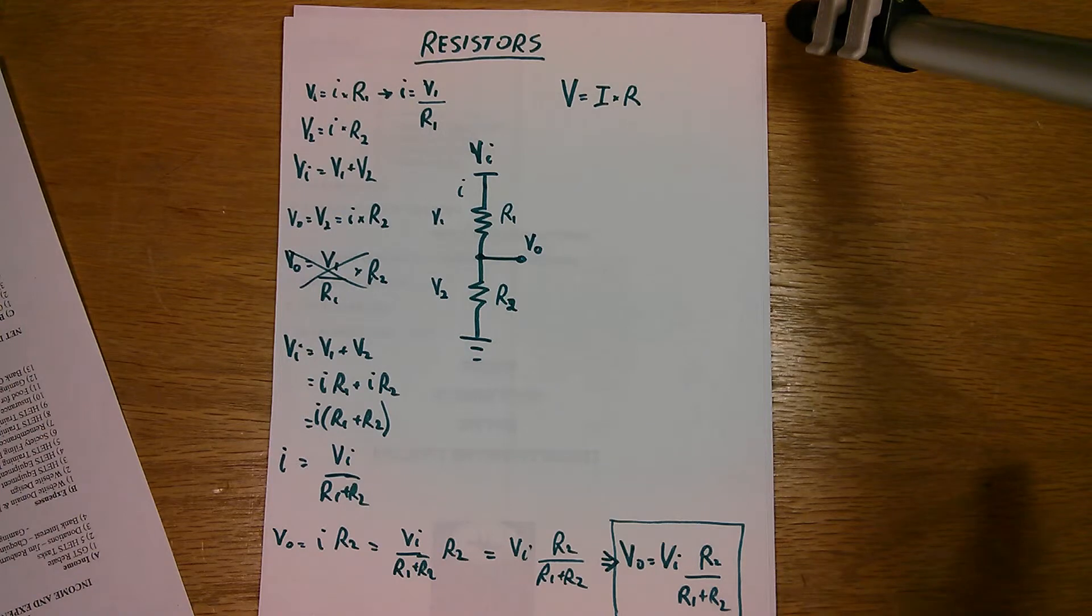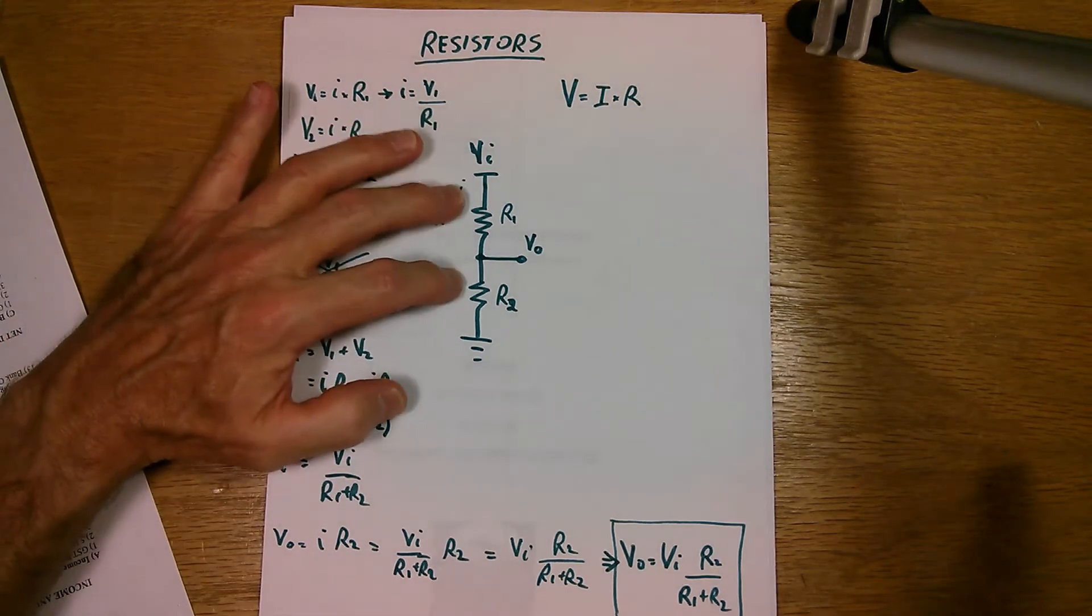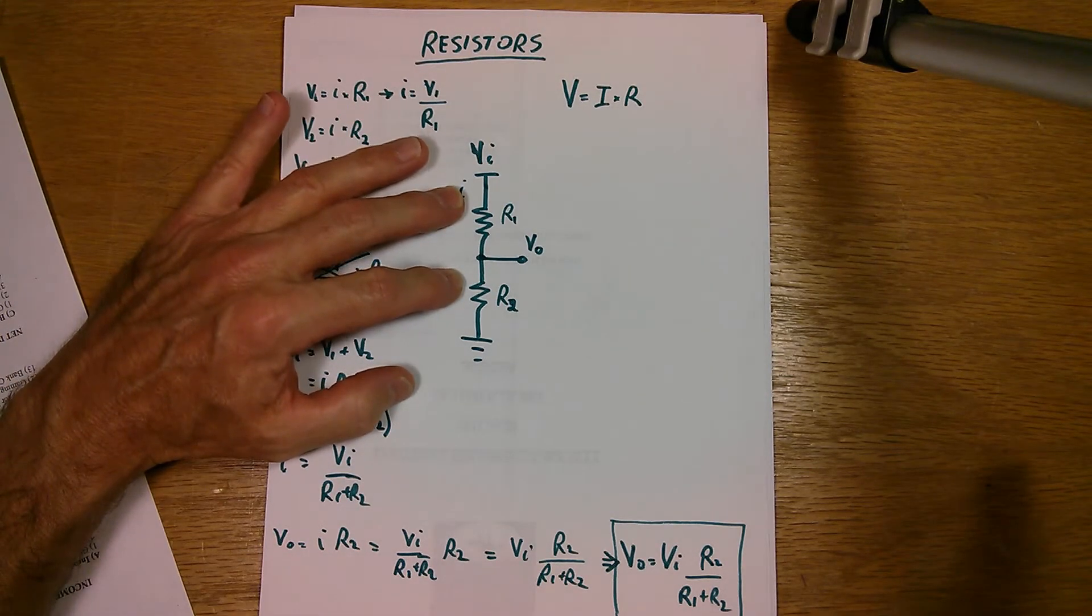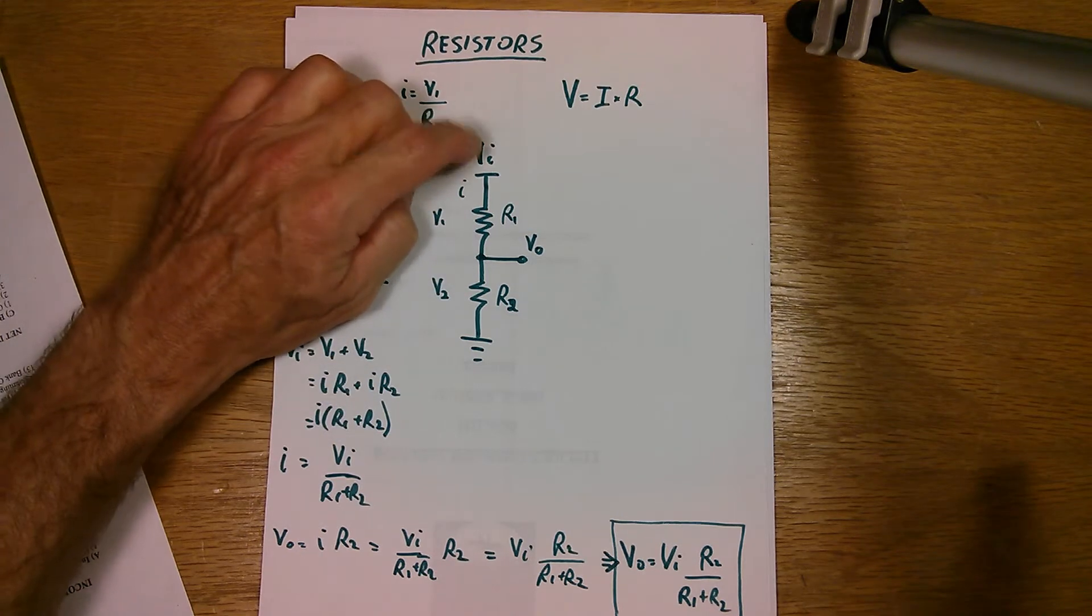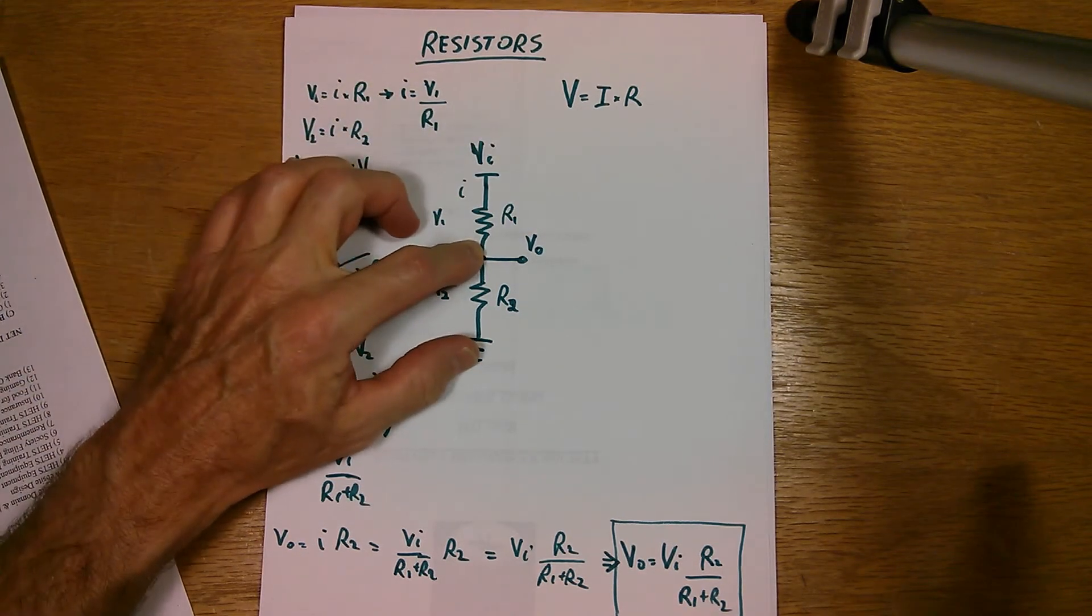So this is a very brief, very quick tutorial, very simplified tutorial on how to use two resistors to make a voltage divider to reduce a higher voltage down to a lower voltage that you could use.